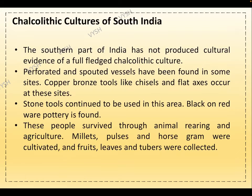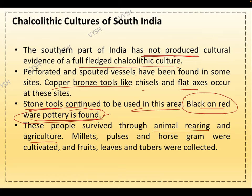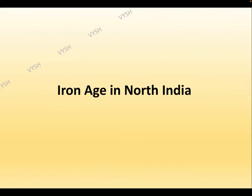Coming to the Chalcolithic cultures of South India — the southern part has not produced evidence of a full-fledged Chalcolithic culture. Perforated and spouted vessels have been found at some sites. Copper and bronze tools like chisels and flat axes occur at these sites. Stone tools continue to be used. Black-on-red ware pottery is found. These people survived through animal rearing and agriculture — millets, pulses, and horse gram were cultivated, and fruits, leaves, and tubers were collected.